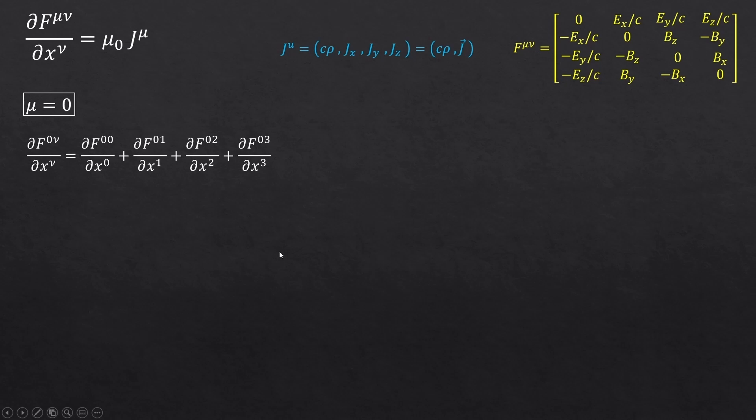Now, let's look at our first term. It's dF0,0. F0,0 corresponds to this one, right? And dx,0 is the temporal derivative. So we'll have this, 1 over c, d0 over dt. The next one is f01 over dx1. F01 is the x component of the electric field divided by the speed of light. dx1 is just the dx, so we have it here. We'll have the rest two components in a similar way.